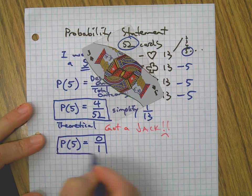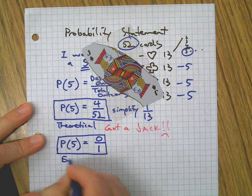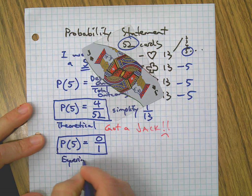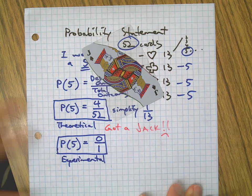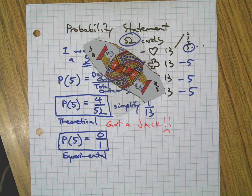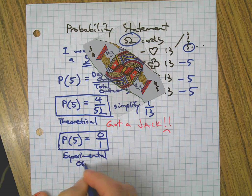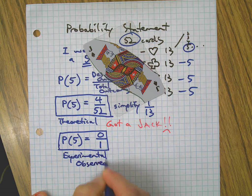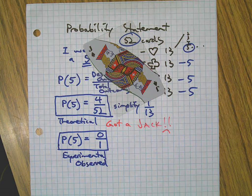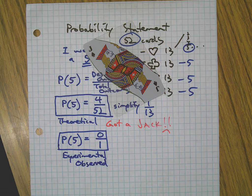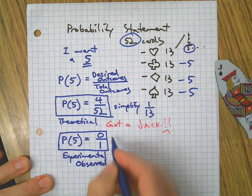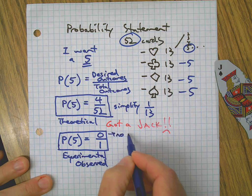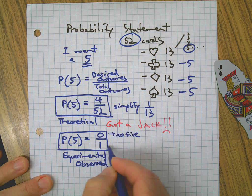See how the experimental is different than the theoretical? I only performed the experiment one time, and now I'm 0 for 1. That's my observed. That's what happened. I have proof, physical evidence of that. It didn't happen. This means no 5.